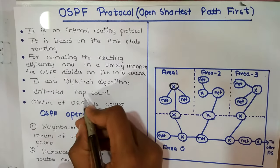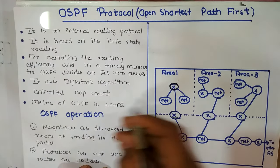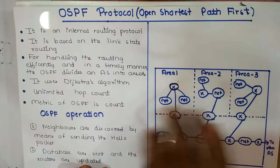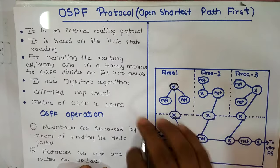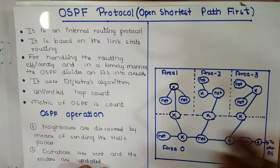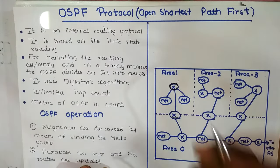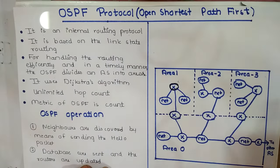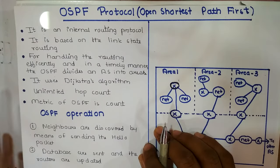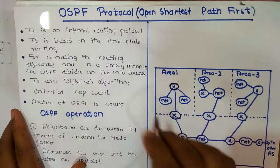Hop count is simply the number of routers along the way to reach the destination. So the OSPF protocol has a bigger advantage of having unlimited hop count.